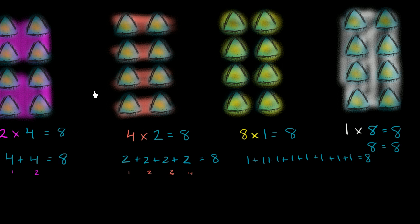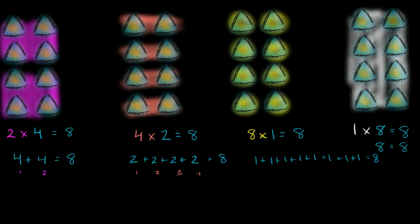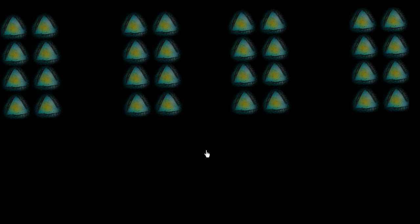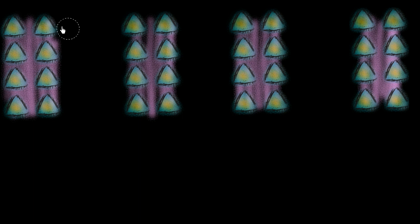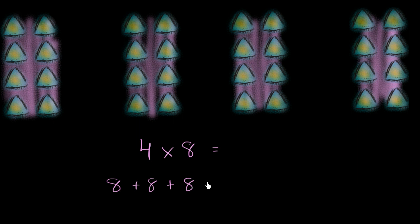So far we've been focused on each of these groups. But what if we actually viewed this as four groups of eight? How many things are we actually going to have? We have one group of eight, two groups of eight, three groups of eight, and four groups of eight. So we would view this as four times eight, which is the same thing as eight plus eight plus eight plus eight — four eighths.